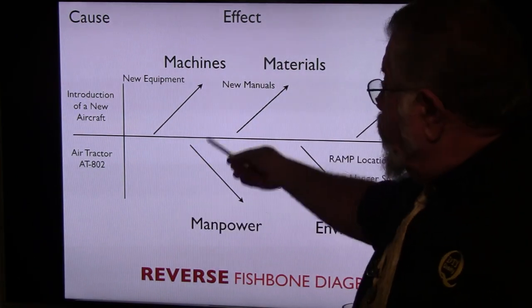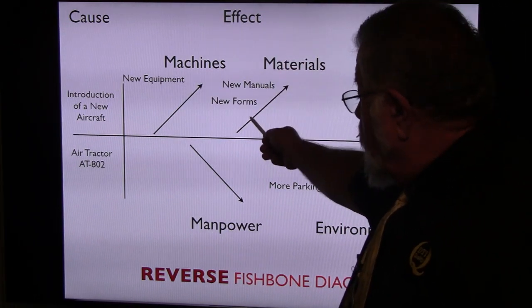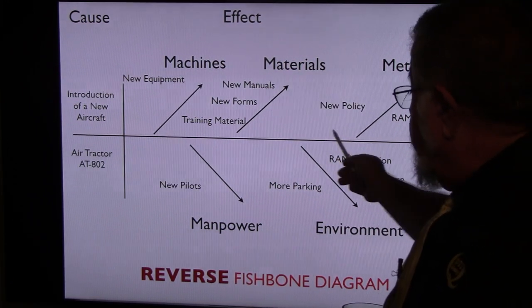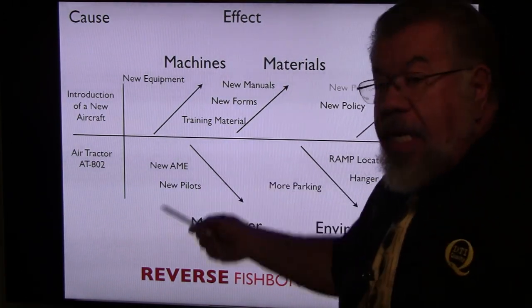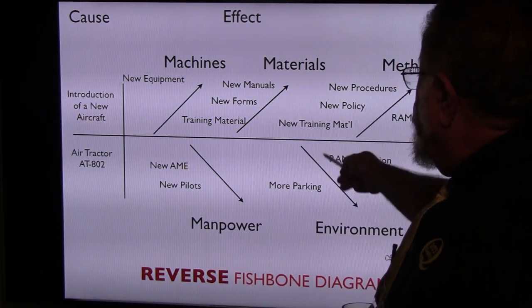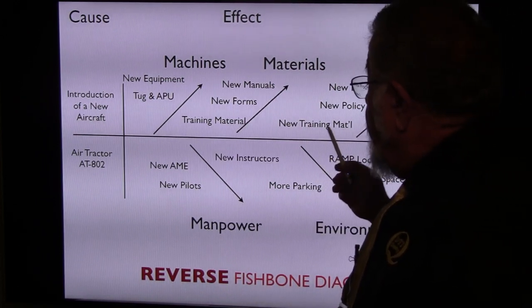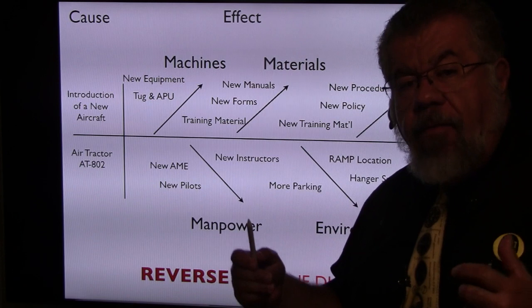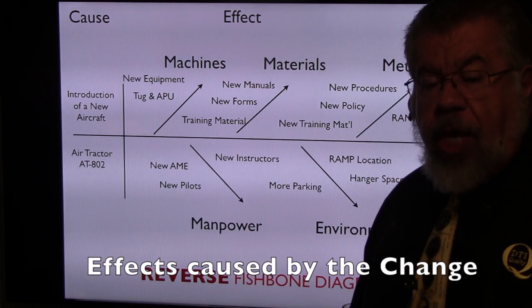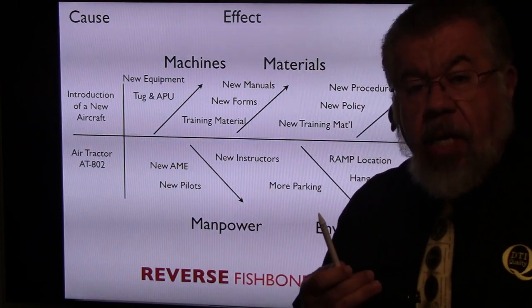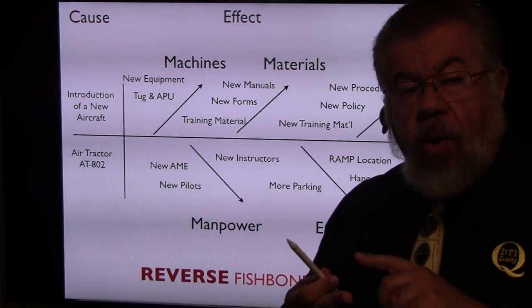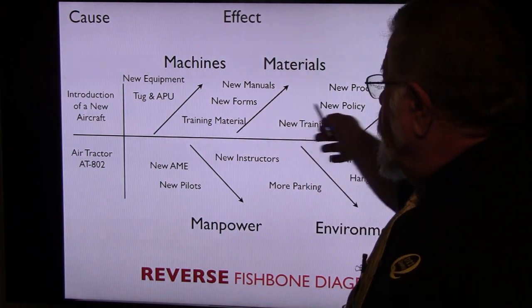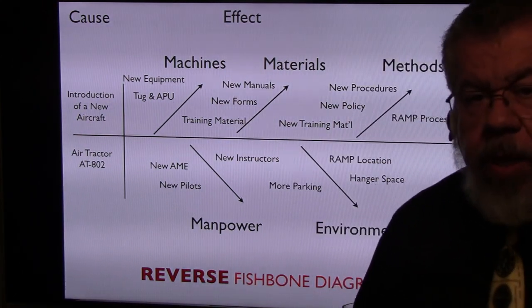When we introduce a new aircraft, we have to have new equipment, new manuals, new forms. We have to change our ramp processes, our ramp location, hangar space. We need more parking, new pilots, and we might need new AMEs. We brainstorm new training materials and things like that. The whole purpose of this diagram is to brainstorm what effects would be caused by that change — whether you're hiring a new pilot, repaving a runway, or buying new equipment. Whatever changes are being made, we're brainstorming what effects it would have on our company in those different areas.